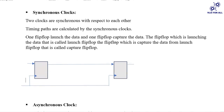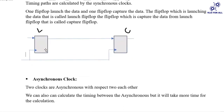One clock will launch the data, and one flip-flop will capture the data. The flip-flop which is launching the data — sending the data — is called the launch flip-flop, and the flip-flop which is capturing the data — receiving the data — is called the capture flip-flop. This applies to synchronous clock paths.